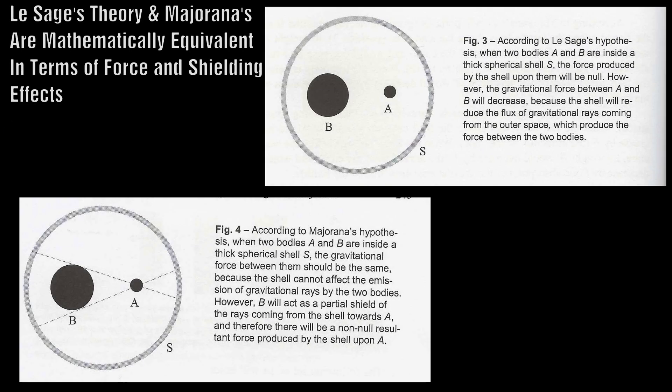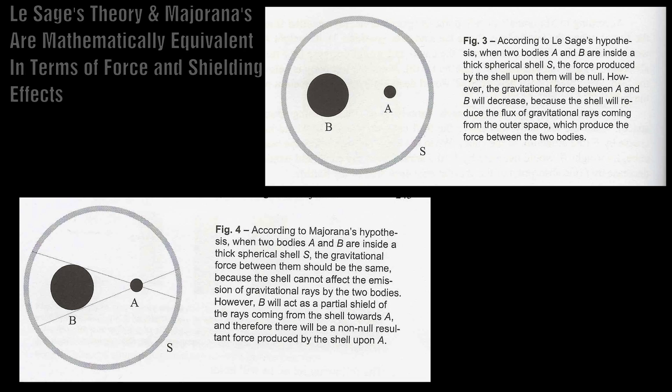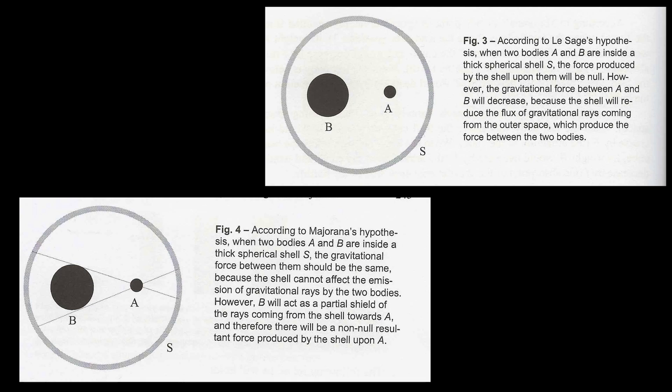Now you might assume that the shielding effect between these two theories would be very different. But in fact, when considering it in both one dimension and three dimensions, they do turn out to be identical. Majorana was not really clear about the mechanism of gravitation he envisaged. Sometimes he referred to gravitational energy flux, and sometimes to particles, and in his later years he referred to these particles as gravitons.